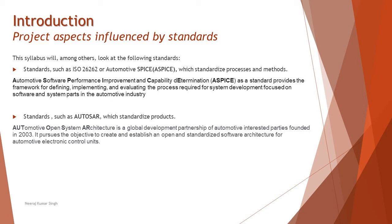The E in ASPICE is taken from 'determination' in between to make a good abbreviation. The second standard we will be covering is AUTOSAR, which stands for Automotive Open System Architecture. It is a global development partnership of automotive interested parties founded in 2003, and it pursues the objective to create and establish an open and standardized software architecture for automotive electronic control units — so it is more of a standard driven towards the product itself.